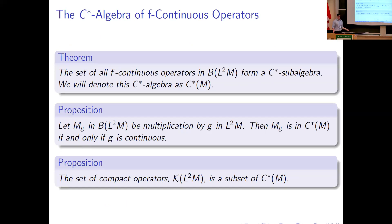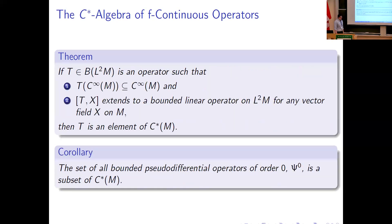Something interesting about this class of operators is that it actually forms a C*-algebra — you can show this with just a little bit of work. The obvious interesting question is what does this C*-algebra contain? You can show that the compact operators are in this, and I've already shown that multiplication operators are in this. It also turns out that if you have an operator that maps smooth functions to smooth functions, and if the bracket of this operator with any vector field extends to a bounded linear operator, then this also gives an F-continuous operator.